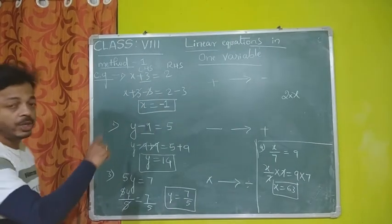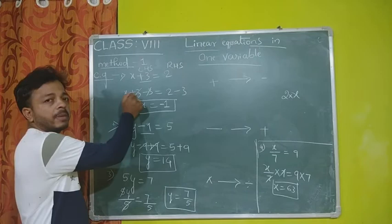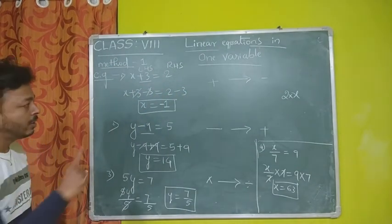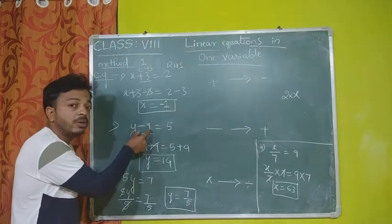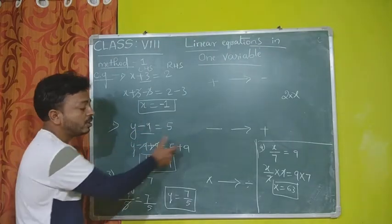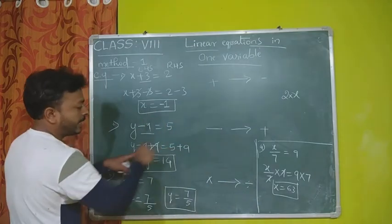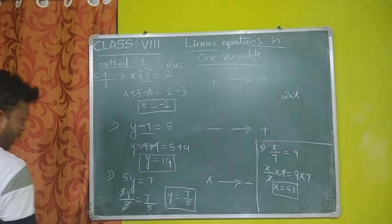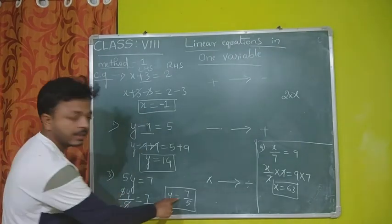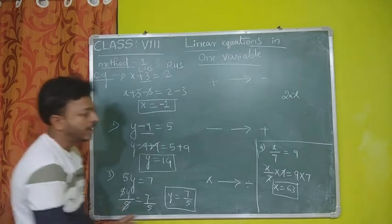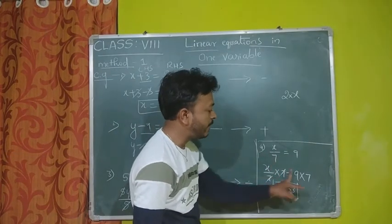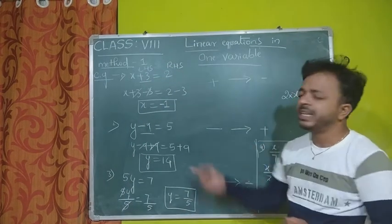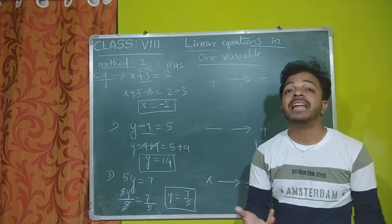Let me recall the rules. If a plus number is there, take minus of the same digit on both sides. If it is a negative number, take the positive of the same digit on both sides. If multiplication is there, divide by the same number on both sides. If division is there, multiply by the same number on both sides. This is Method 1 — the common basic method, also called the balancing method.